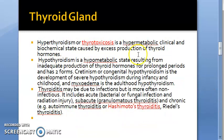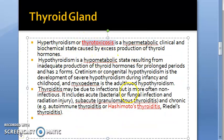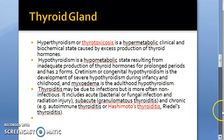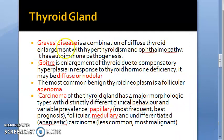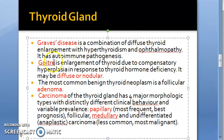For the thyroid gland, you need to know thyrotoxicosis, Hashimoto's thyroiditis, Graves disease, goiter — including nodular goiter — thyroid adenoma, and carcinoma of the thyroid including papillary and medullary types.